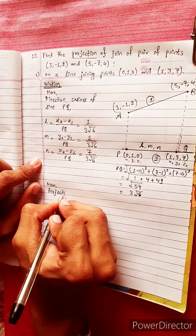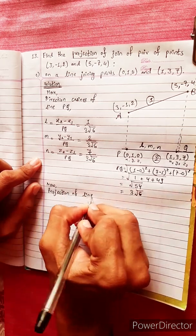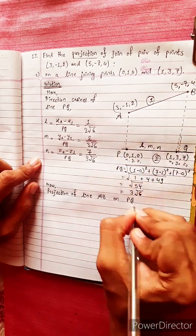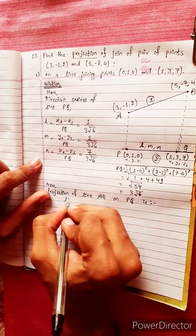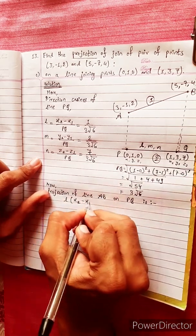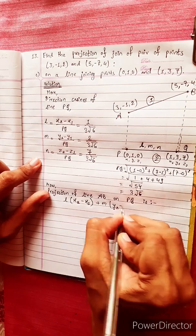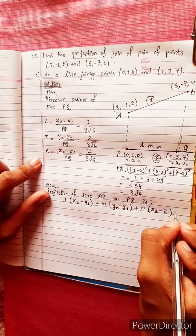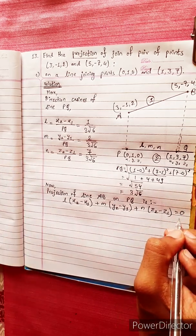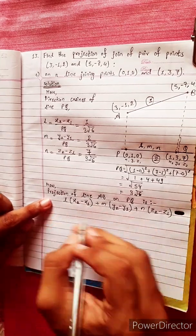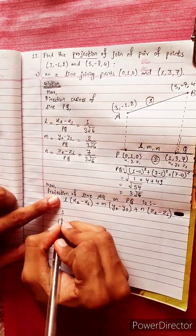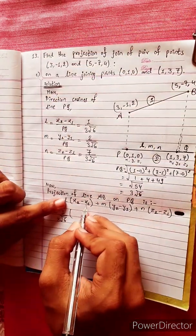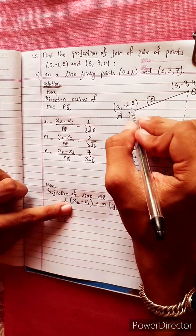Now, projection of line AB on PQ is — we will apply the formula: L into (x2 minus x1) plus M into (y2 minus y1) plus N into (z2 minus z1) equal to 0. Here, projection equals L1 equals 1 divided by 3 root 6, times (x2 minus x1). Cosko laghi ho, x2 minus x1, u pointko laghi ho.